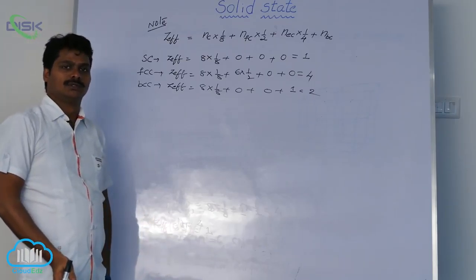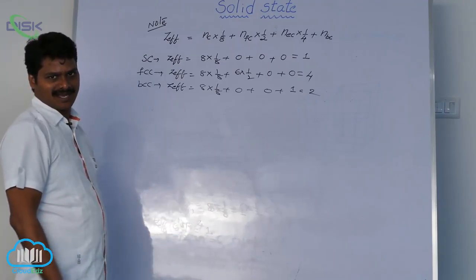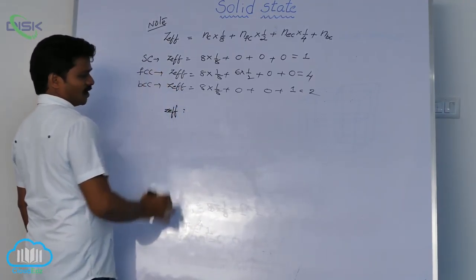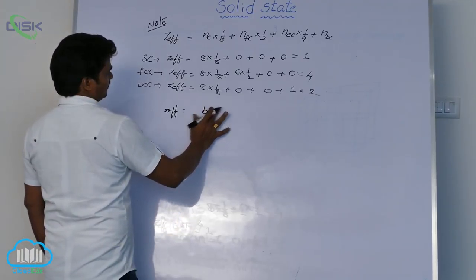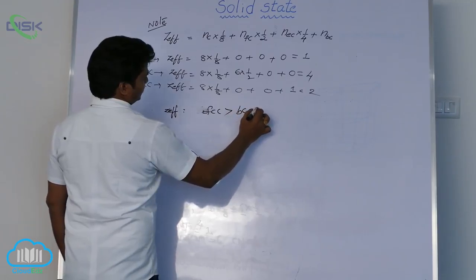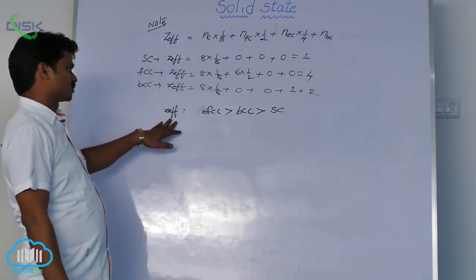Sometimes not only the Z effective number of atoms, as increasing order are increasing. So Z effective, what is the increasing order? It is SCC greater than BCC greater than FCC. This is the prediction number of atoms.